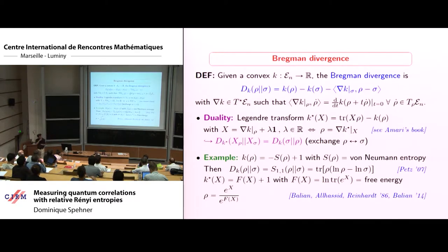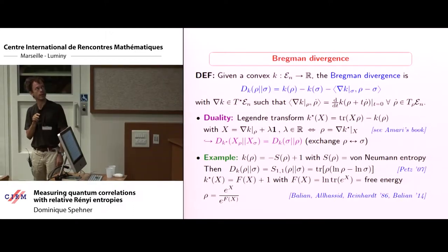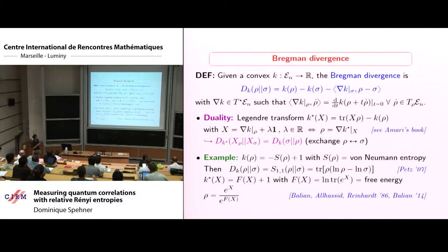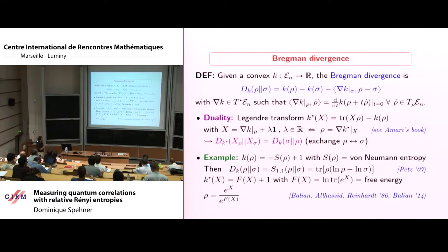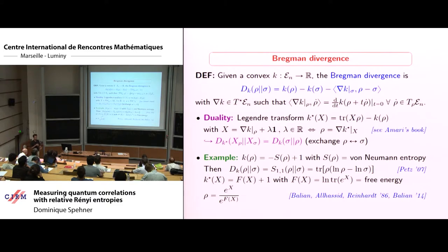Now let's go to the definition of Bregman divergence. You consider a convex function from the set of quantum states to real numbers, and consider this quantity. The gradient is implemented by the derivative: for any tangent vector rho-dot in the tangent space, you make a variation rho plus epsilon times rho-dot, take the derivative with respect to epsilon, and this defines the gradient. This is called Bregman divergence, used widely in information theory — for example, in Amari's book, where there is a nice duality via the Legendre transform.